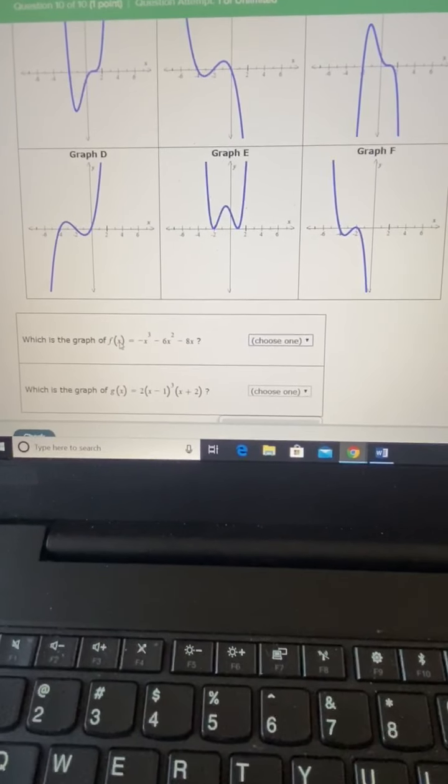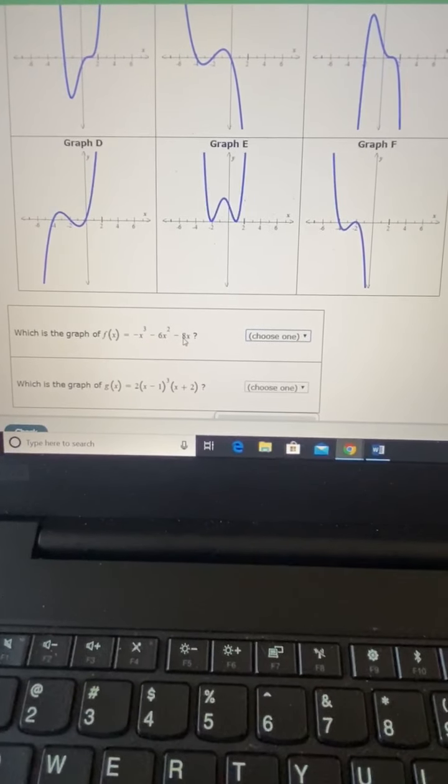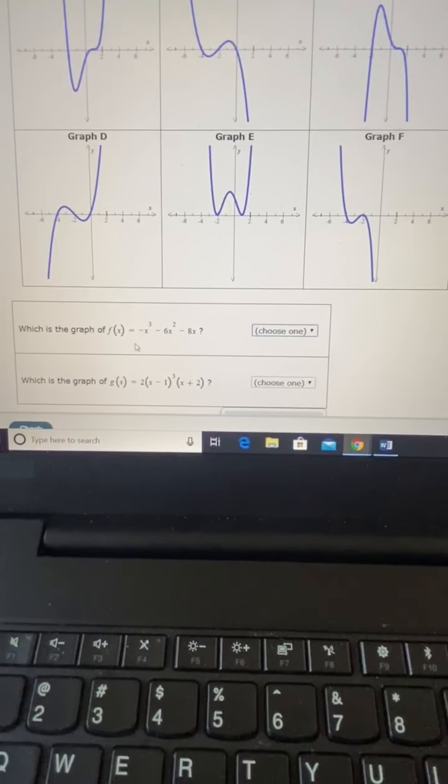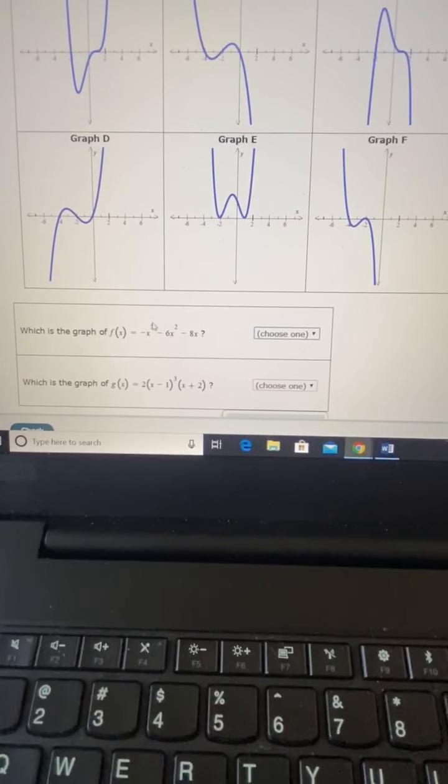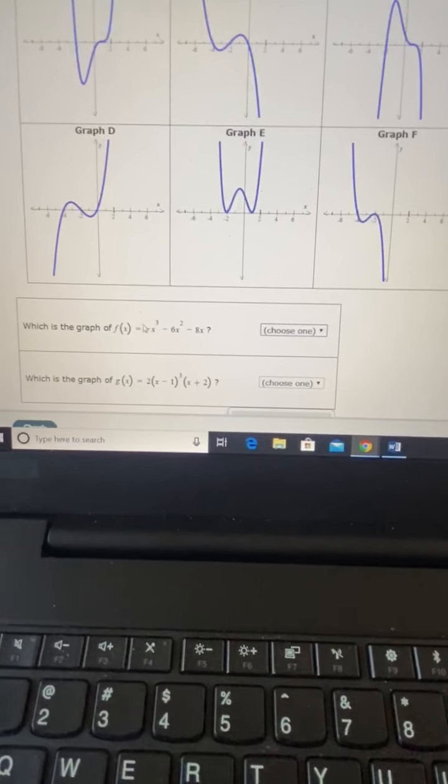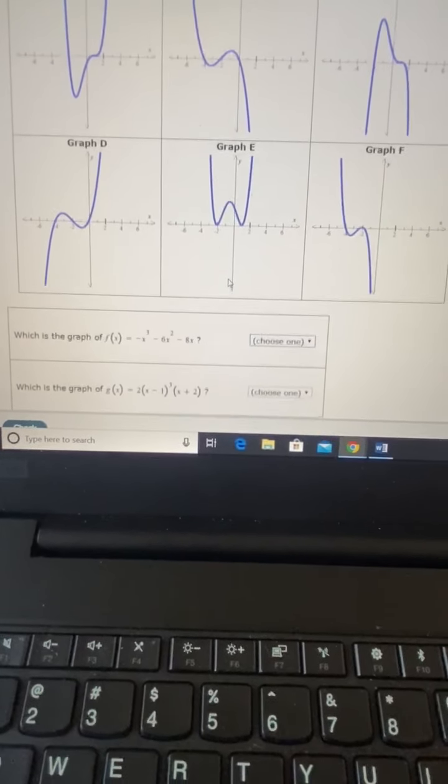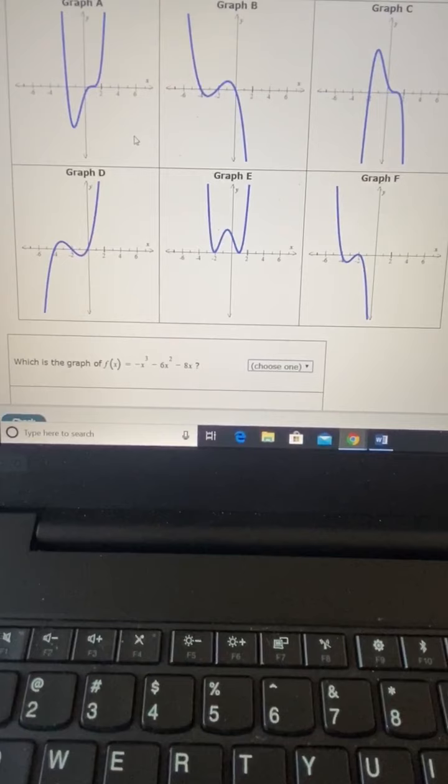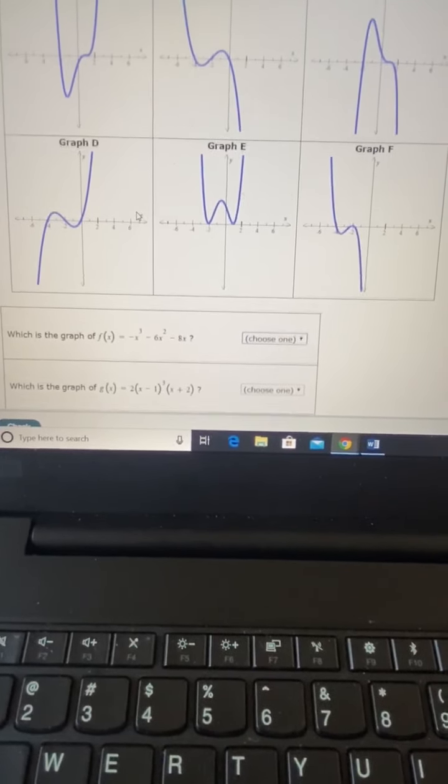Which is the graph of f(x) equals negative x cubed minus 6x squared minus 8x? Again this is all going to hinge on the end behavior. We're looking at the leading coefficient which is negative and the exponent which is 3, so it's odd. So it's going to be rising to the left and falling to the right. We want to look at these graphs and say do any of them rise in the left and fall on the right, and they do.